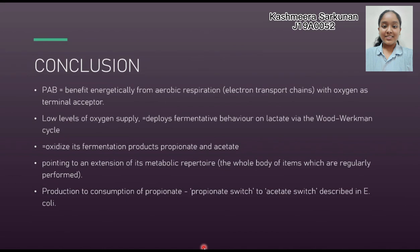As a conclusion, PAB benefits analytically from aerobic respiration with oxygen as a terminal acceptor. A low level of oxygen supply deploys fermentative behavior on lactate via the Wood-Werkman cycle to oxidize fermentation products, propionate and acetate. This points to an extension of the metabolic repertoire, from production to consumption of propionate — the propionate switch — to the acetate switch, as described in E. coli.